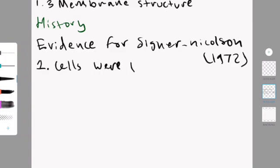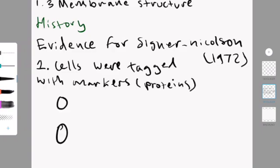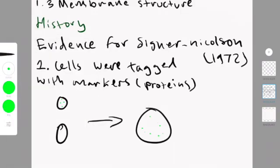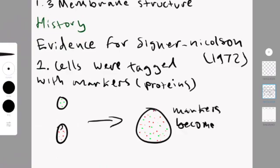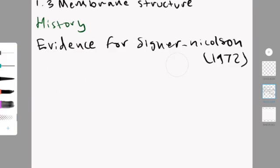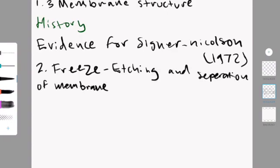The first thing was that cells were tagged with different markers, the proteins were tagged. If you can see in this model, there was a protein with green and a protein with red, and when you mix them, it became red and green, not just separately, but they mixed, meaning that there is fluidity within a membrane.